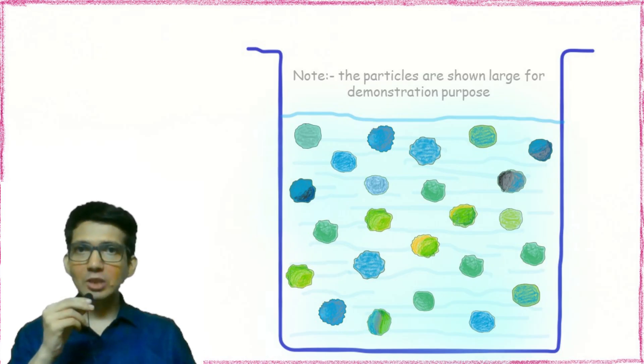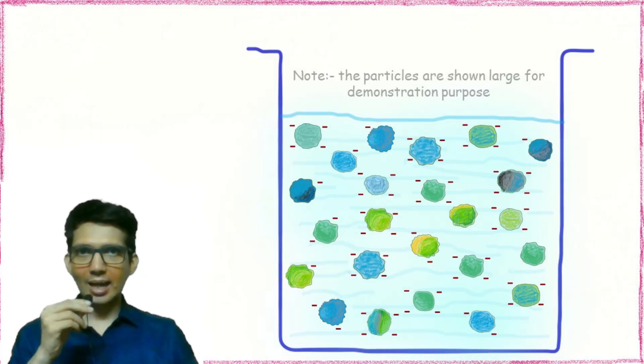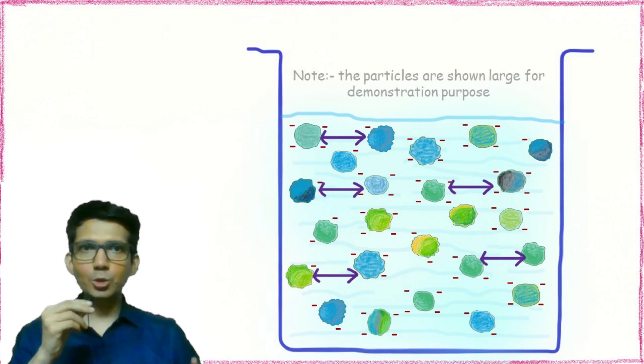The particles in liquid suspension often remain suspended due to their small size and electric charge. Most of these particles have a negative charge. As a result, they keep repelling each other and fail to settle.